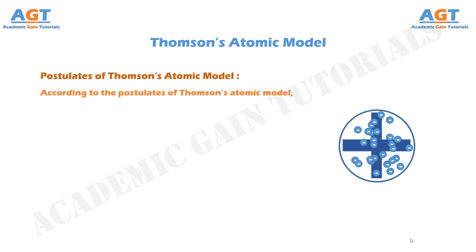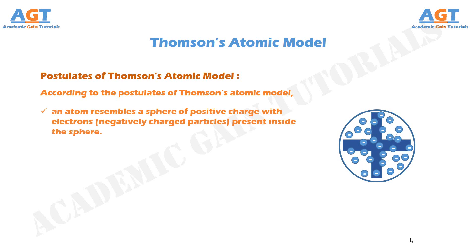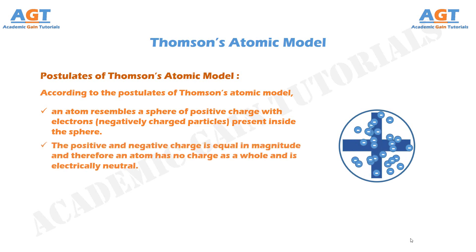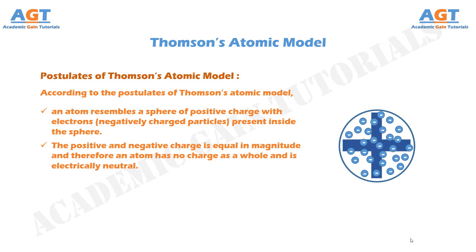According to the postulates of Thomson's atomic model, an atom resembles a sphere of positive charge, with electrons — which are the negatively charged particles — present inside the sphere. The positive and negative charge present inside an atom is equal in magnitude, and therefore an atom has no charge as a whole, and thus it is electrically neutral.